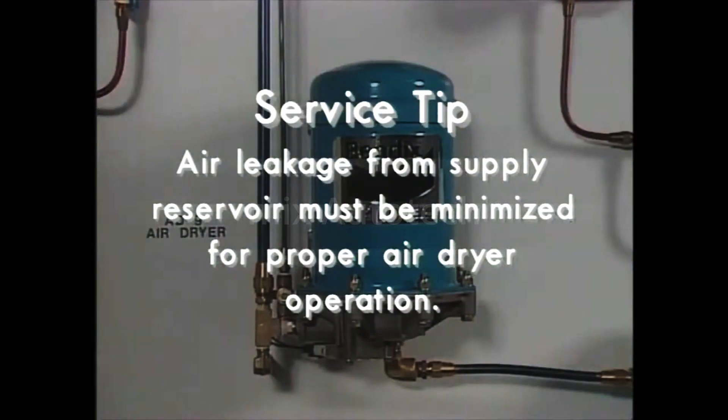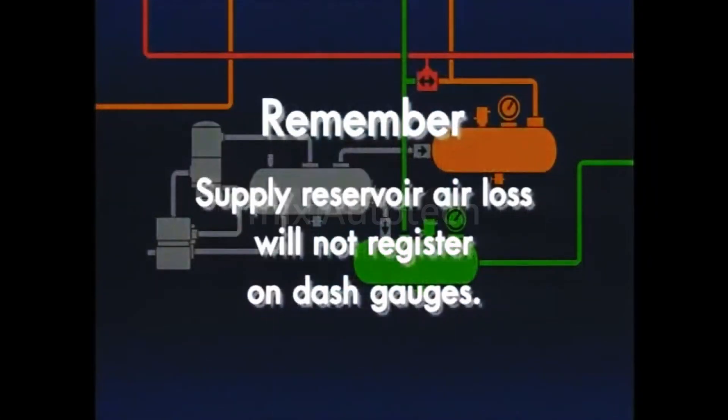Leakage in the supply reservoir will result in the compressor cycling between loaded and unloaded, causing the air dryer to alternate between the charge and purge cycle. It must be remembered that air loss in the supply reservoir only will not be registered on the dash gauges because of the single check valves that protect the service reservoirs.